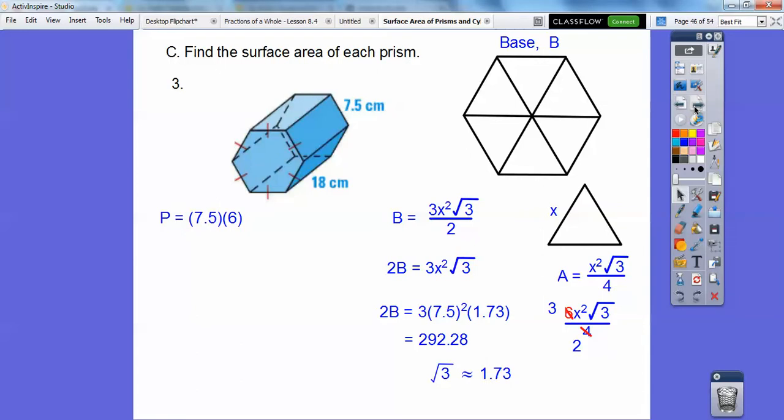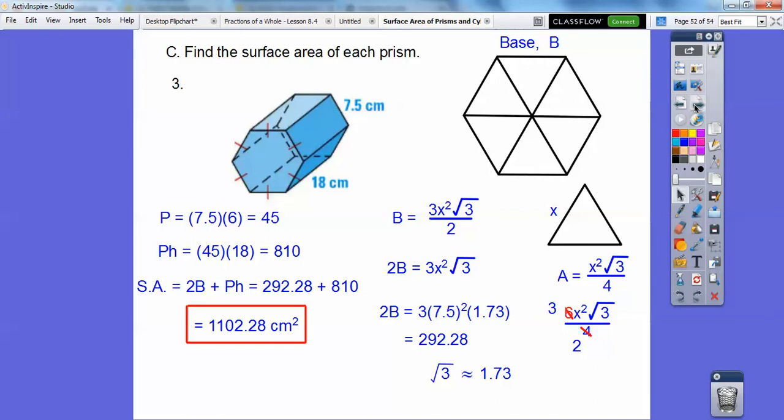We've got to find the perimeter. So the perimeter is pH. So p is 7.5 times 6. And then we're going to multiply it times 18 after we multiply those guys. So we get 45 times 18. Then add them together. So 2B plus pH. And we get that as our final answer. Isn't that a beauty right there?